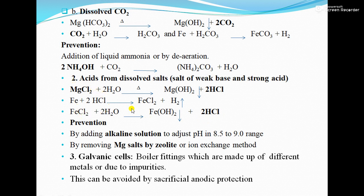This corrosion is due to the presence of magnesium chloride, so we must remove it. The corrosion also occurs due to the hydrochloric acid generated, so we need to neutralize that acid. Prevention: use an alkaline solution to adjust the pH of water to the range 8.5 to 9. To remove the magnesium chloride, we use the zeolite method or ion exchange method, which will be covered in the coming lecture.